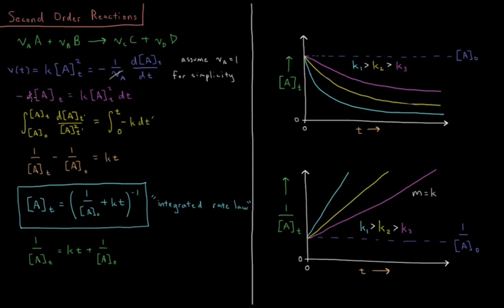So minus dA, if we multiply both sides by dT, minus dA equals K times A squared times dT. If we then divide both sides by A squared, we have dA over A squared equals minus K dT. If we then integrate both sides, as we've separated all the A dependents over here and the T dependents over here,